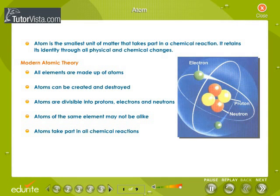According to Modern Atomic Theory, atoms of an element contain protons, neutrons and electrons. These atoms can take part in chemical reactions. An atom is the smallest unit of matter that takes part in a chemical reaction. It retains its identity through all physical and chemical changes.